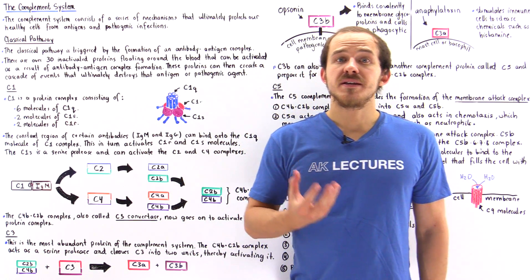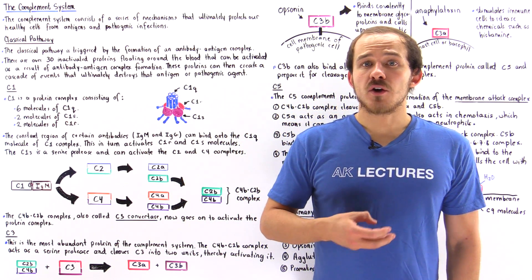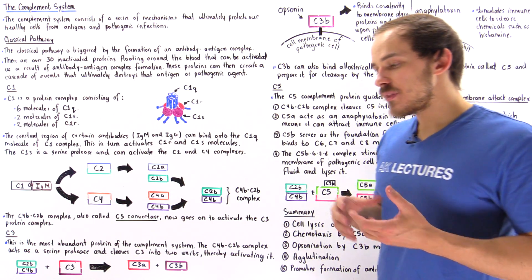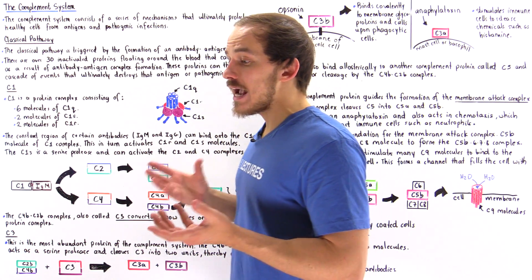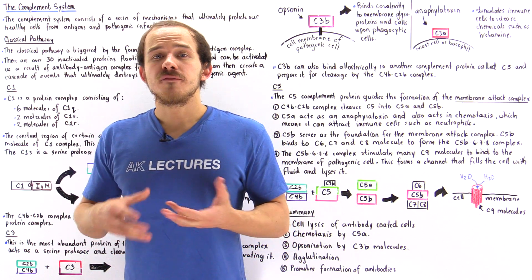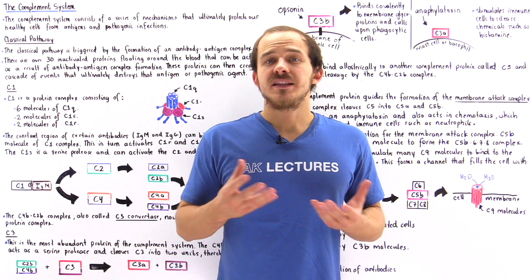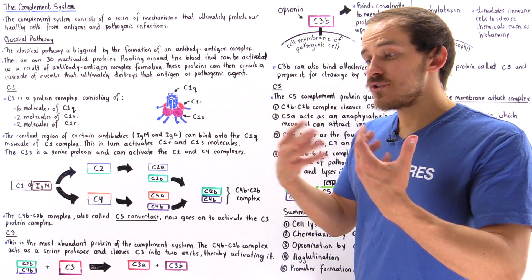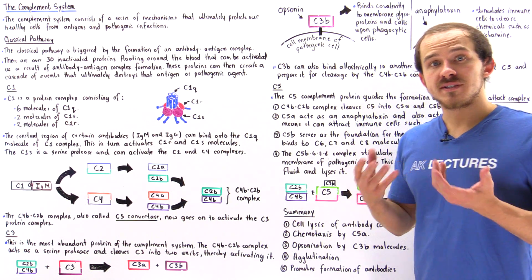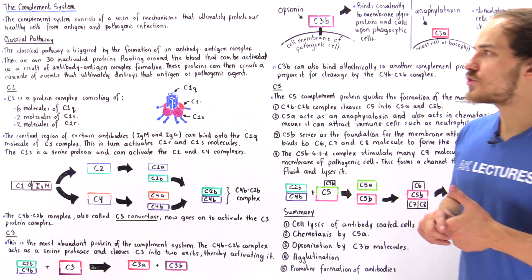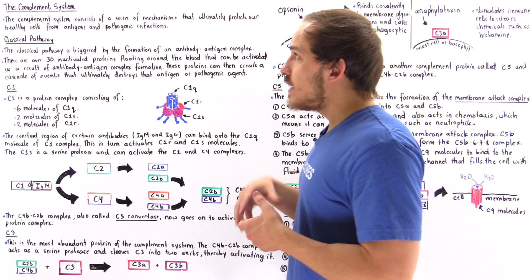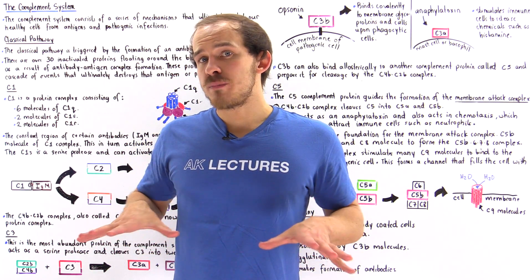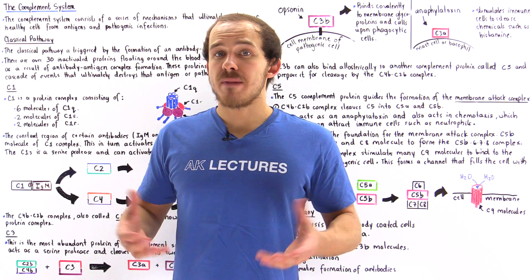The complement system is basically part of our immune system. What the complement system aims to do is protect our healthy cells from different types of pathogens and toxic substances that can get into our body and cause damage to those healthy cells. Generally speaking, the complement system can be broken down into two pathways, two major mechanisms.